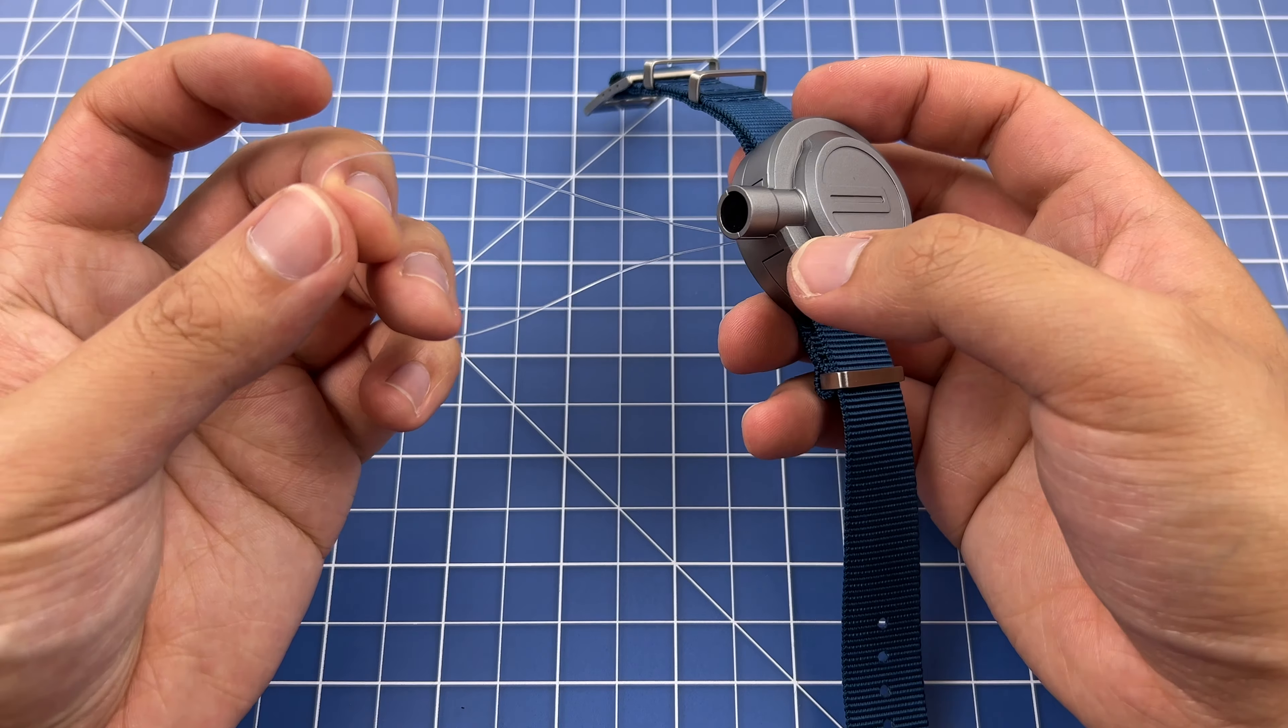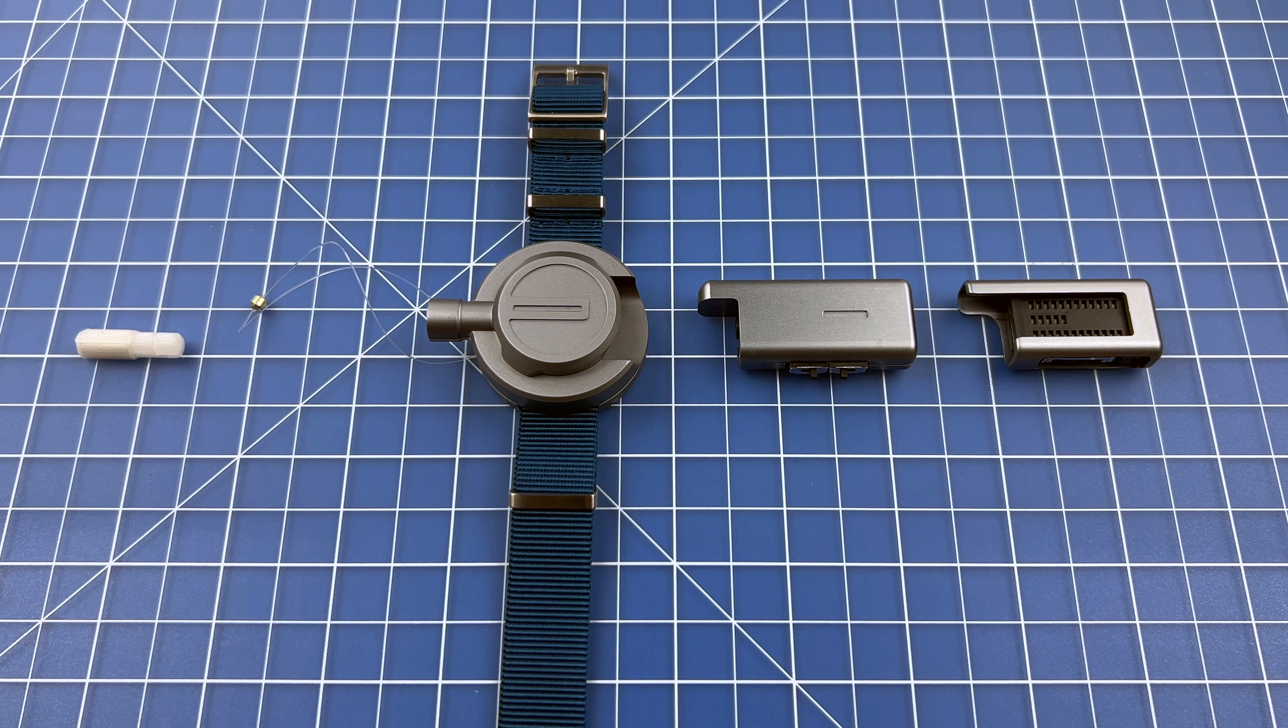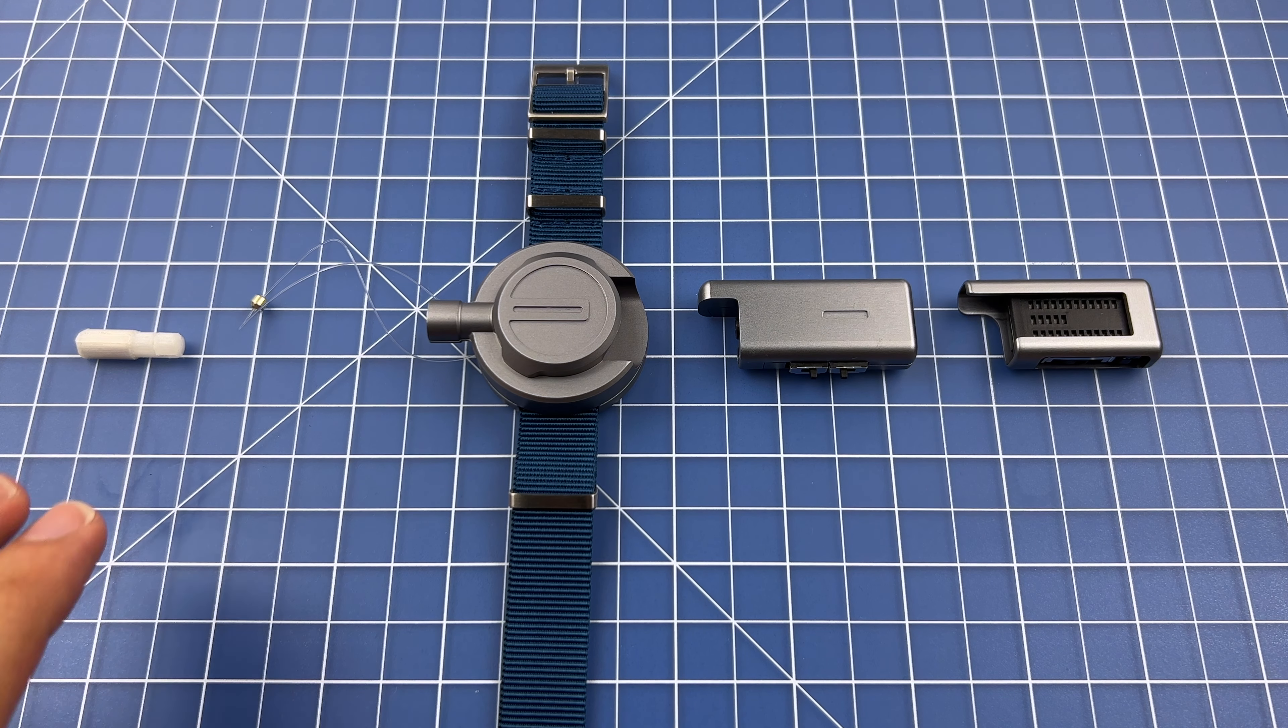As a first step, make sure you adjust the nylon line to your specific hand length, as explained in the instructions sheet. Here we have laid out the main body, the thread cartridge, the watch cartridge, and the magnetic projectile.